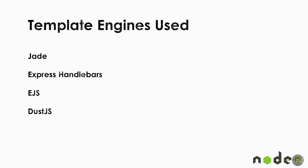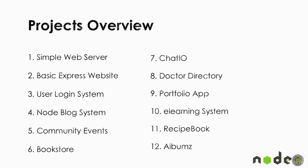The template engines we'll be using include Jade, Express Handlebars, EJS, and Dust.js. For the project overview: Project 1 is a simple web server using sample code from the Node.js website. Project 2 is a basic Express website. Project 3 is a user login system using Passport. Section 4 will be a blog system.